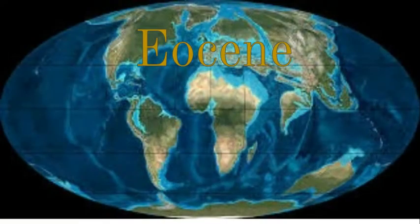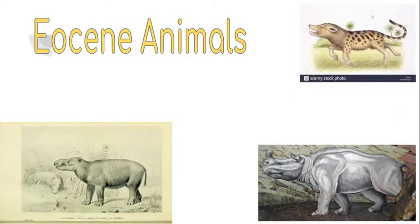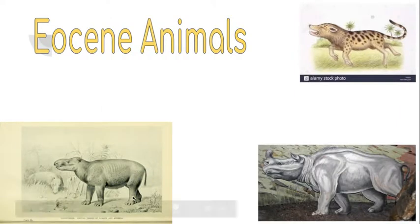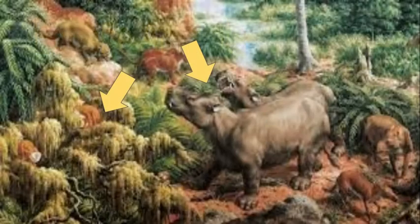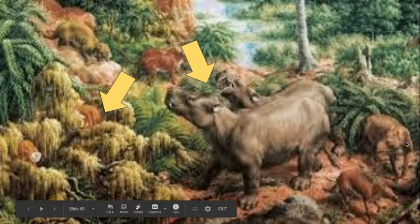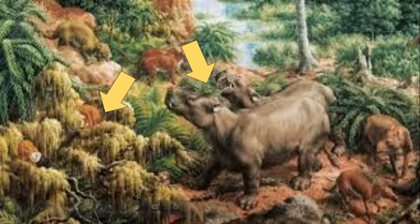Next period was the Eocene. Here are some Eocene animals — again, some weird tapirs, weird rhinos, and a tiny leopard-like animal. Here's an ecosystem with rhinos, some weird tree-like animals, some shrews, tapirs, and smaller life.